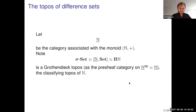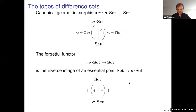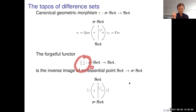Being a Grothendieck topos, the topos of difference sets has a canonical geometric morphism to Set. The global sections functor is the functor I denote by 'fix', which simply corresponds to taking fixed points of sigma on X. We have the natural forgetful functor from sigma-sets to sets which forgets the difference operator, and that turns out to be an inverse image of an essential point into sigma-sets. This slide introduces the notation 'fix' and the forgetful functor, which I will use quite a lot.